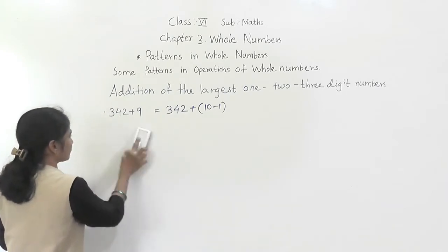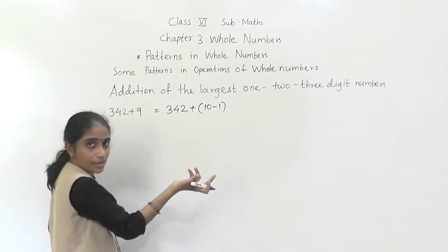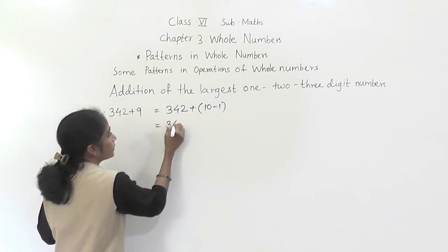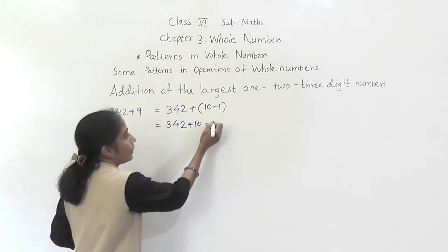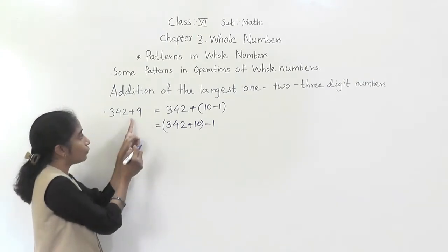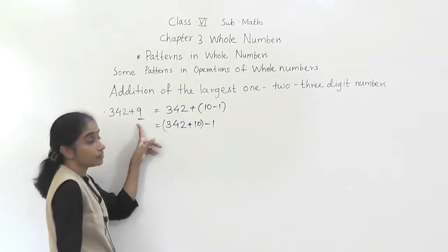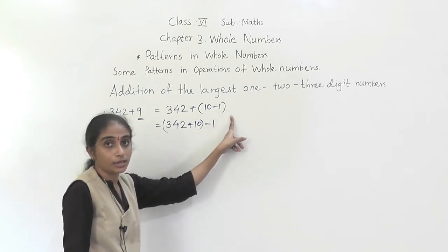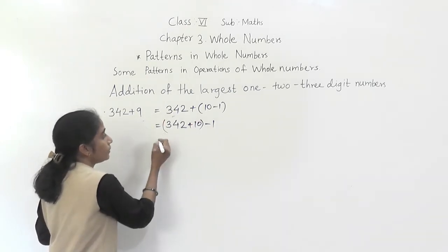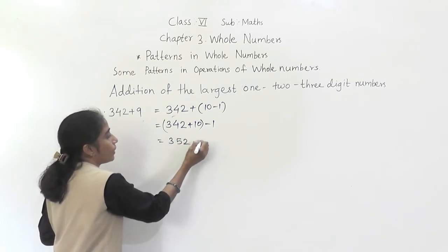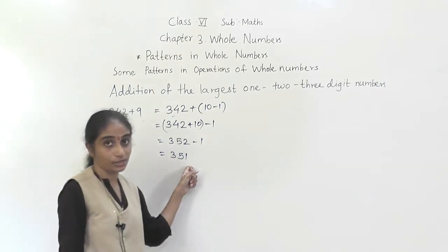For example, 342 plus 9: since 9 = 10 − 1, we write 342 + (10 − 1). First do 342 + 10 = 352, then subtract 1, giving 351. So 342 + 9 = 351. We get the answer very easily using this pattern.